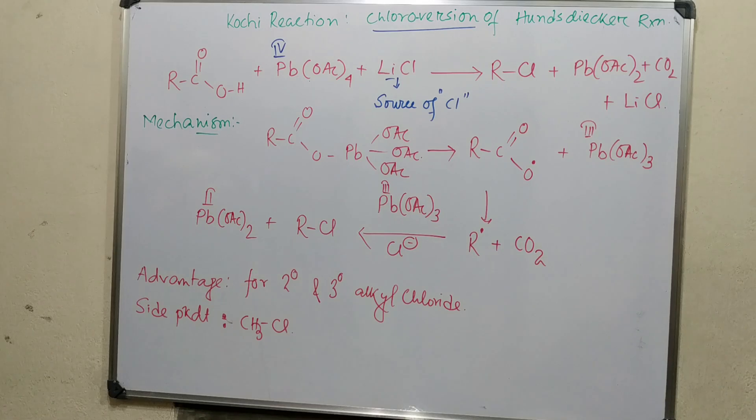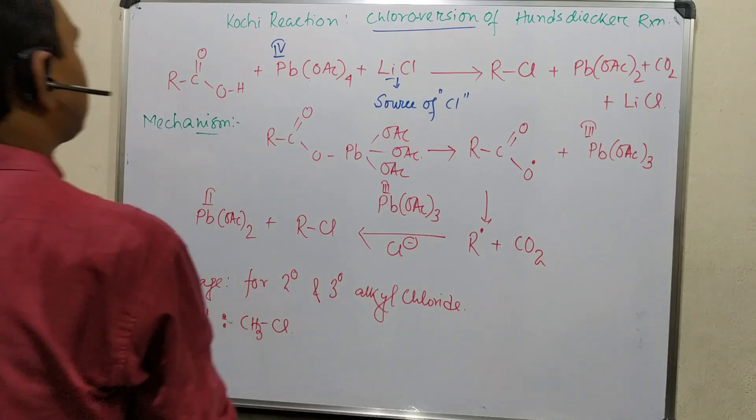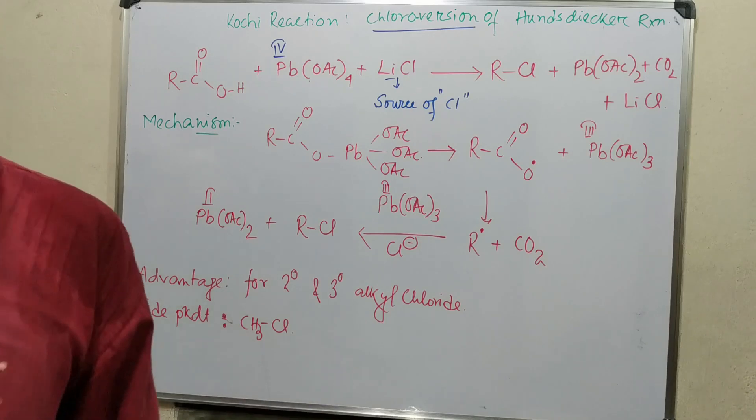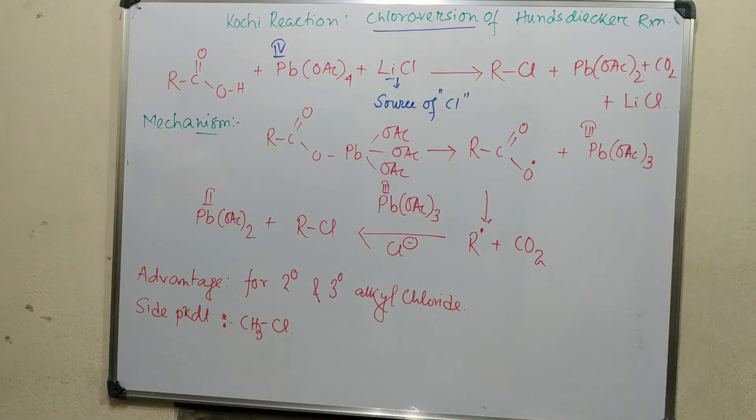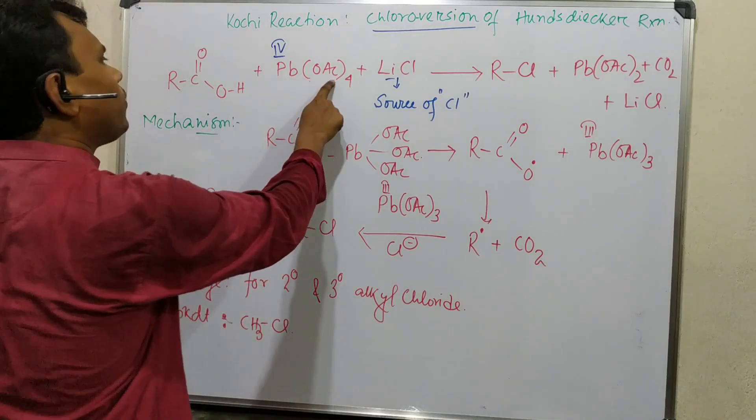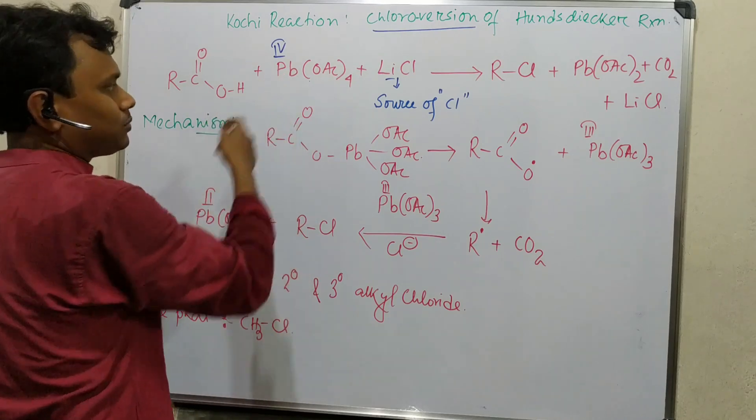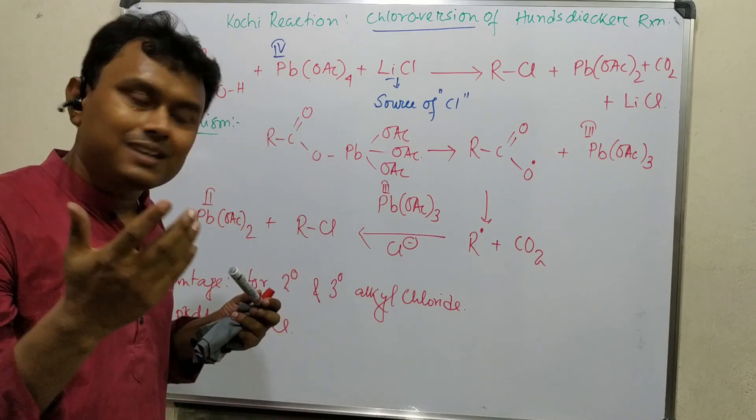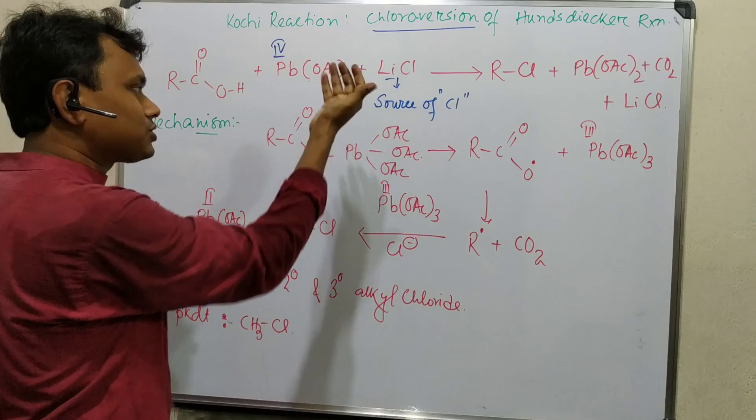What happens here? This lead reacts with the carboxylic acid. First, the carboxylic acid coordinates to lead. Since it has four acetate groups, when one carboxylic acid coordinates, the third or fourth acetate will be eliminated.